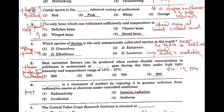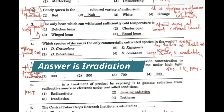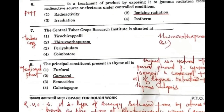The next question covered the treatment of a product by exposing it to gamma radiation from a radioactive source or electron beam under controlled conditions. After that, a straightforward question: the Central Tuber Crops Research Institute is located — options included Trivandrum, Periaculum, and Coimbatore — and the answer is the second option.